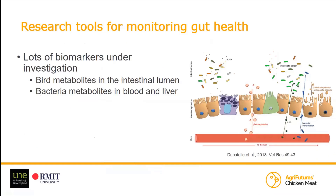Because of that, there are lots of biomarkers under investigation all over the world in many labs. As explained regarding the tight junctions of the intestinal epithelium — what you expect when you have a healthy gut — and the opening of these tight junctions when there is pathology. The majority of biomarkers for gut health look for bird metabolites: plasma proteins and proteins from epithelial intestinal cells that go into the intestinal lumen and into feces and litter samples, or bacterial metabolites or whole bacteria that leak from the gut into the blood and the liver.